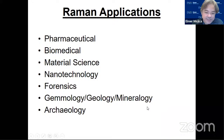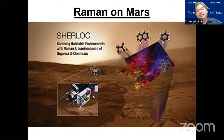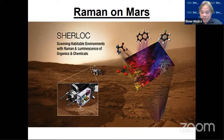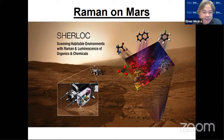And the exciting thing is Raman was used in the Mars rover. They call it SHERLOCK — Scanning Habitable Environments with Raman and Luminescence of Organics and Chemicals. What SHERLOCK has is it uses spectrometers, a laser, and a camera to search for organics and minerals that have been altered by watery environments and maybe signs of past microbial life on Mars.